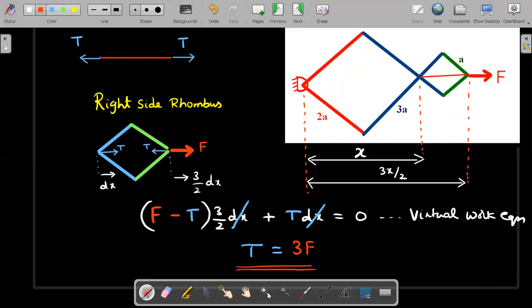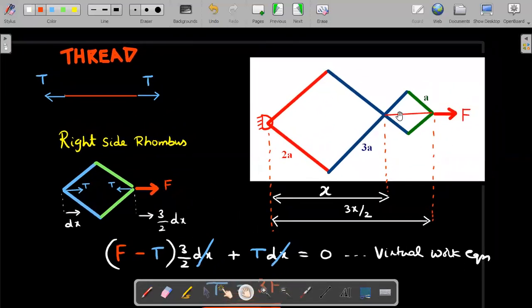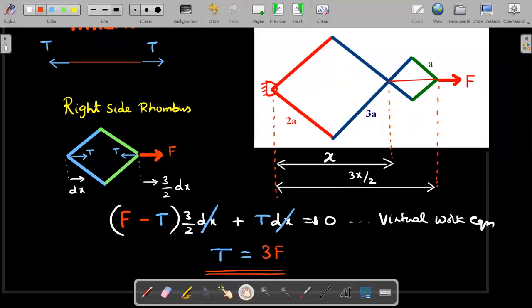Then you would immediately get the required value of T. If you rearrange would be nothing but 3F. And that would be actually the same result if I had split up each and every rod's FBD and drawn all the forces in X direction, Y direction and solved the entire thing. You would still end up getting the same answer of 3F, which we have got with less sweat here in a direct manner.